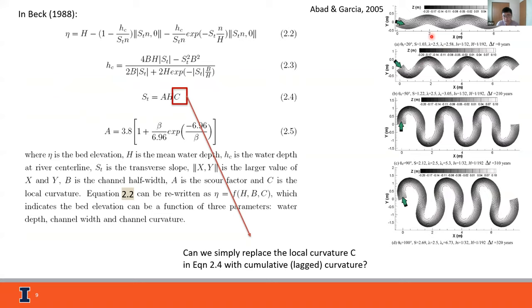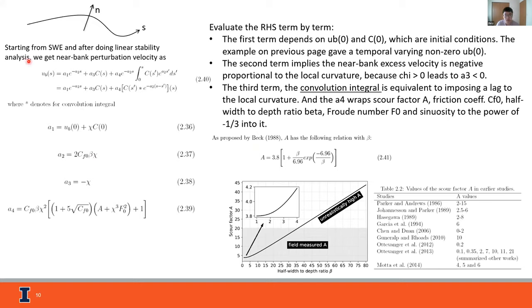The question comes: can we simply replace the local curvature with some kind of cumulative curvature? After a series of derivations of linear stability analysis, using the shallow water equations as a starting point, we can get equation 2.40. A number of studies already did some research on this equation. We can evaluate the right-hand side term by term.